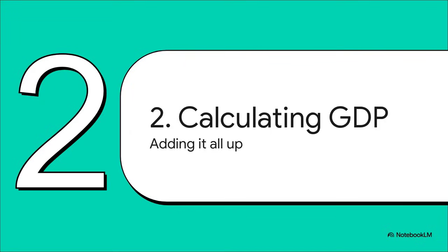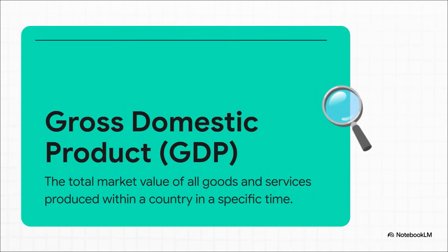Now for the main event, calculating the gross domestic product. This is the big number, the one that's supposed to capture the total value of everything our little economy cranked out in 2009. The official textbook definition of GDP is the total market value of all finished goods and services produced inside a country in a certain amount of time.